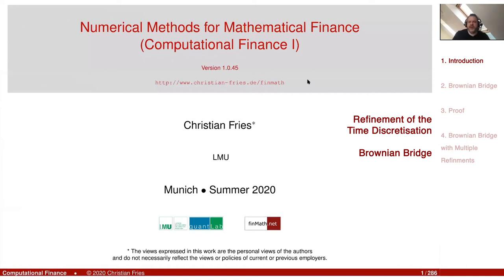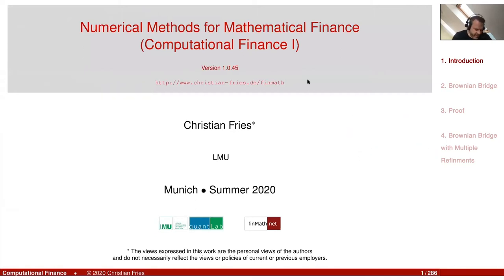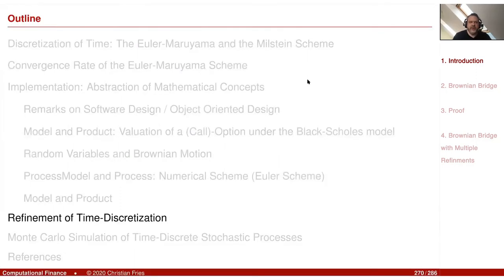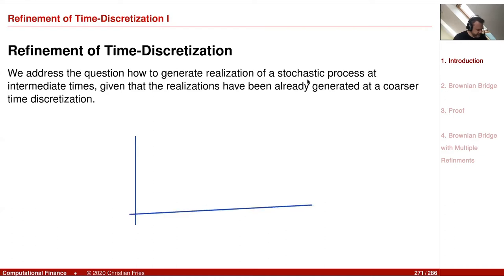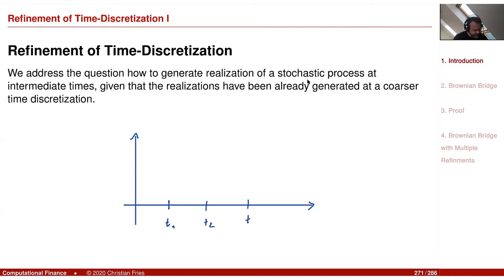In the next 10 minutes, I would like to discuss the refinement of the time discretization by a Brownian bridge. The question is: we have generated a Brownian motion, and maybe from it an Euler scheme stochastic process. This means I have a time discretization t1, t2, t3, and from that we have created a stochastic process.